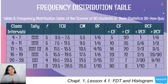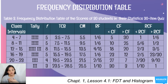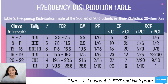Relative frequency (RF) is the quotient of each class frequency divided by the total. Since our total is 30, the first row has RF of 5/30, which equals 1/6. The second row also has 5/30, or 1/6. The third row has 8/30, which equals 4/15. Continue this for all rows.